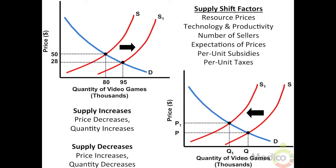Second, technology and productivity — an increase in labor productivity will shift supply to the right. Third, number of sellers in the market — an increase in the number of sellers will shift supply to the right. Fourth, subsidies to producers — an increase in per unit subsidies will shift supply to the right. Taxes on production — a decrease in per unit taxes will lower the cost of production and shift supply to the right.